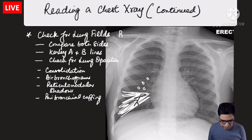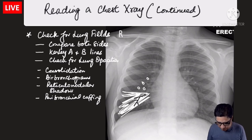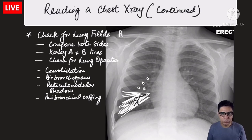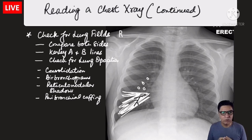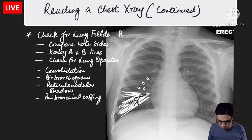To summarise looking at the lung fields: look for air bronchograms, lobar consolidation, nodular or reticular patterns, and their extent — whether unilateral or bilateral. Compare both sides systematically from top to bottom. This systematic approach to both lung fields completes your ABCDEF assessment of the chest X-ray.